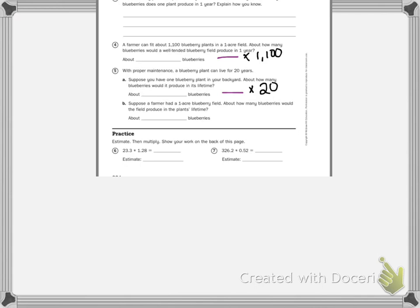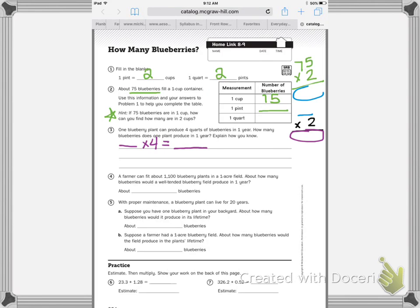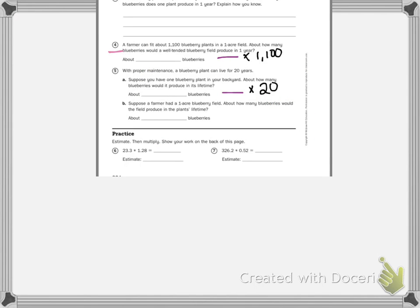Then it says suppose a farmer had a one acre blueberry farm. About how many blueberries would the field produce in a plant's lifetime? So if I go back, I'm going to use red or this pinky color. So that was number four. So you're going to take your answer to number four and multiply it by 20. That's going to give you your answer for B.